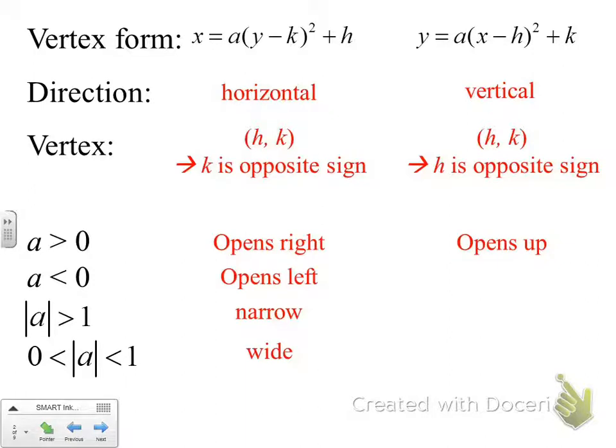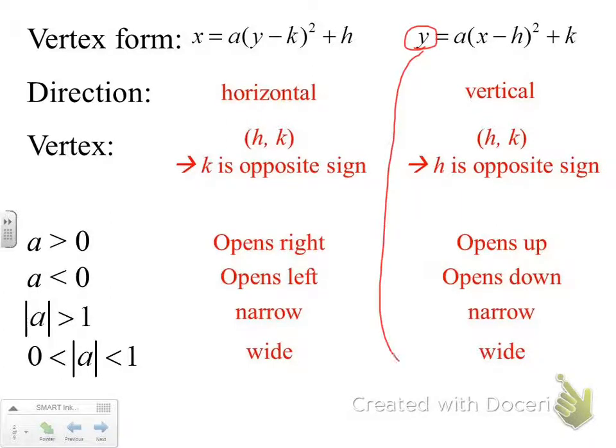When the a value is positive, that means our parabola will open up. When the a value is negative, our parabola will open down. And the same holds true for an absolute value of a being greater than 1 will be a narrow parabola. When the absolute value of a is between 0 and 1, that will be a wide parabola. So when the y value is isolated, that means our parabola will open up or down. Y will be isolated. X will be squared for this form of a parabola.